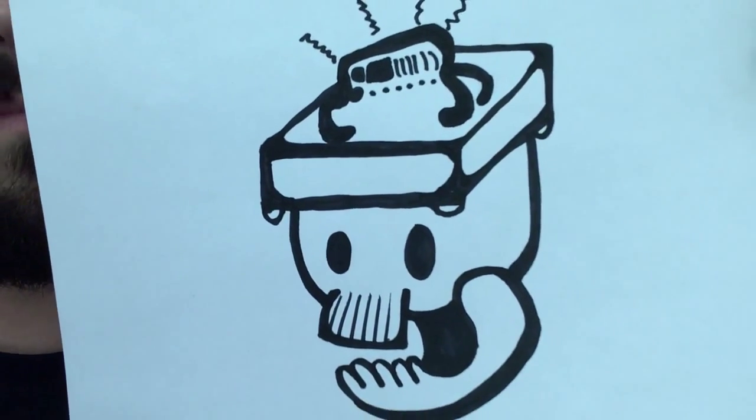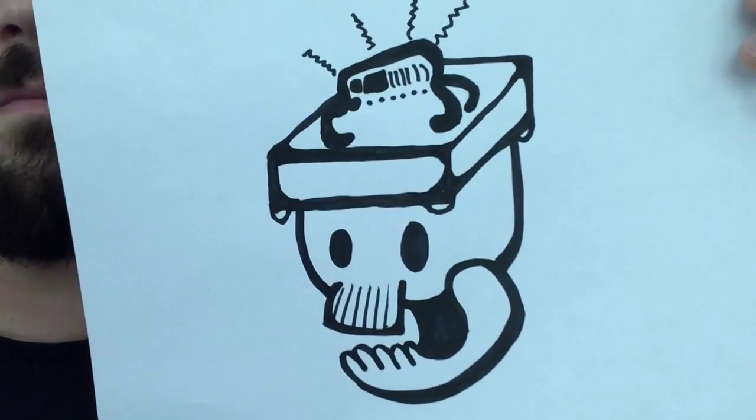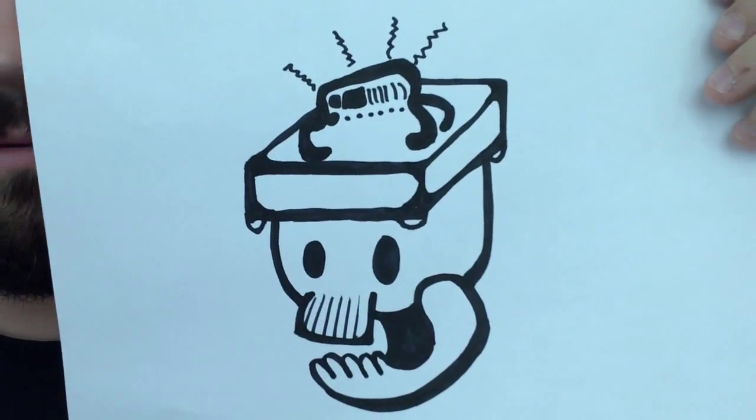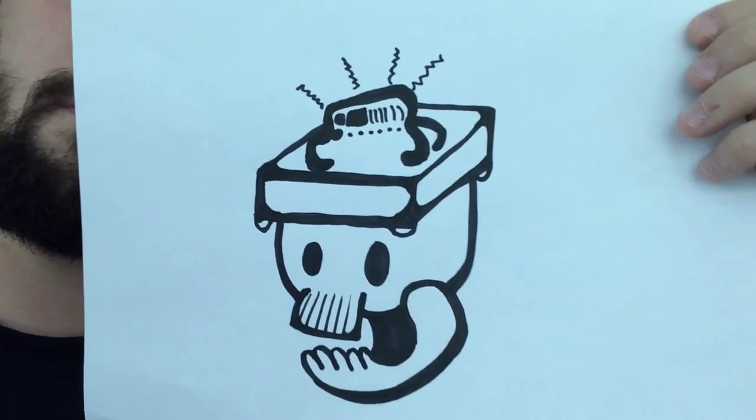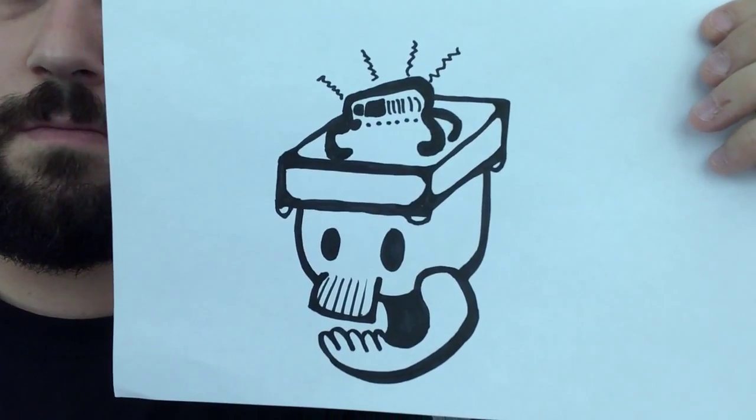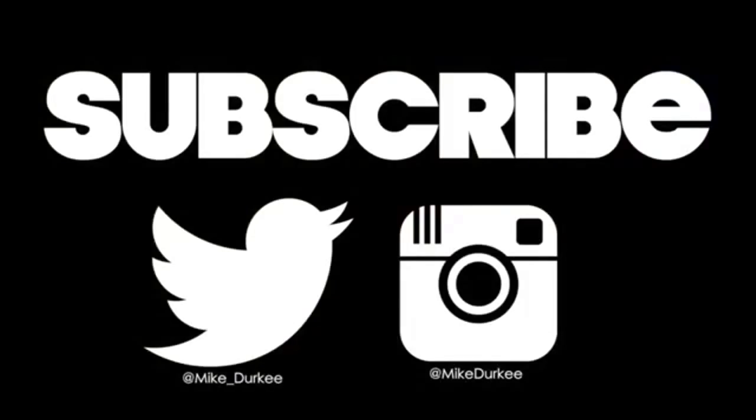I drew the Lawnmower Man. I've never actually seen the movie, but I drew a dude with a part of a lawnmower on his head. I'm not sure it looks like a lawnmower. It kind of looks like a kippa, but it's a skull with a kippa. So God bless it.